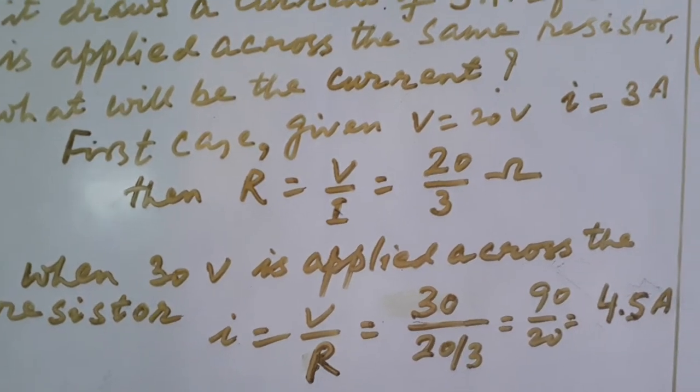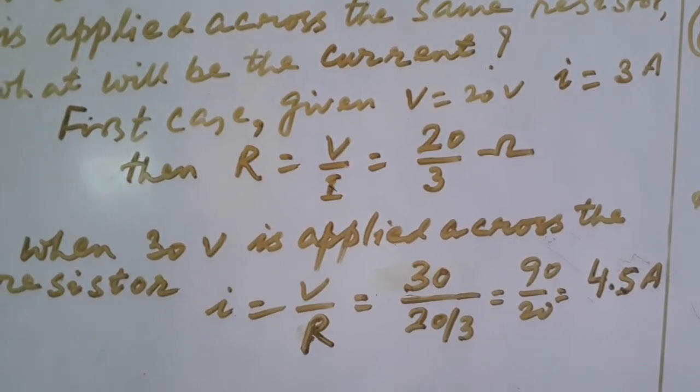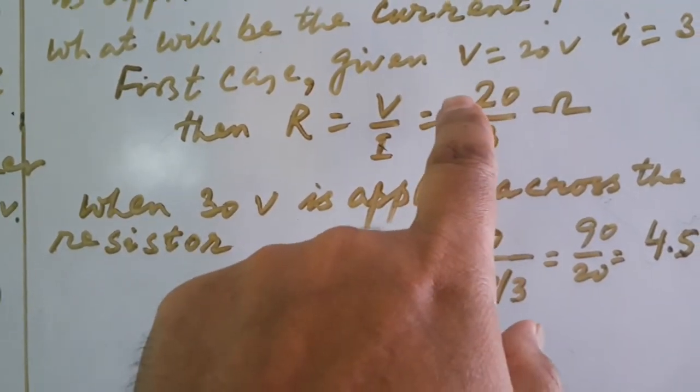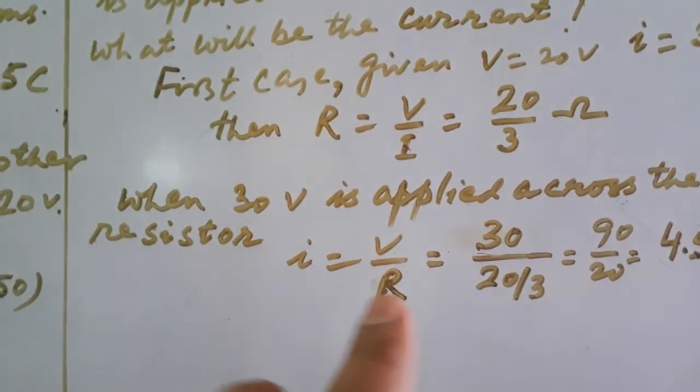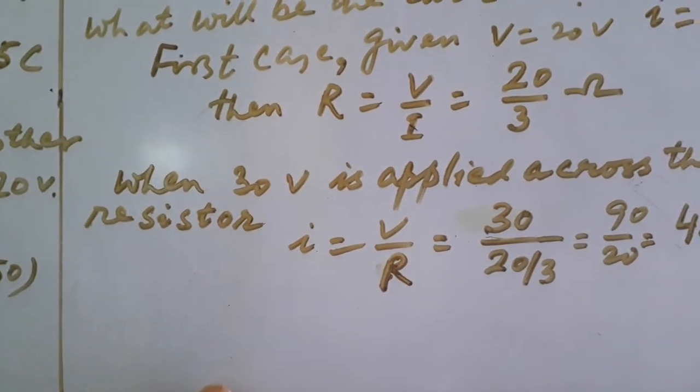In first case, you will be able to find the resistance. Resistance equal to V by I. V is given, I is also given, taking the ratio, you will get resistance. Now when 30 volt is applied, you write I equal to V by R because you are going to find the current in the second case.